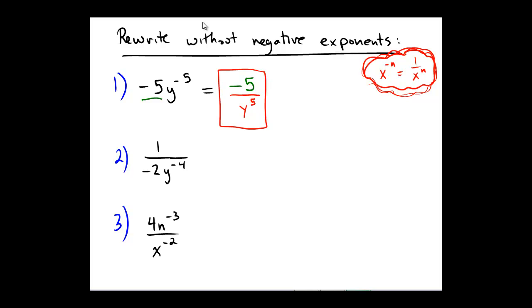On the second problem, here we have a 1 on the top and a negative 2 on the bottom. And we have a y being raised to the power of negative 4 in the denominator.